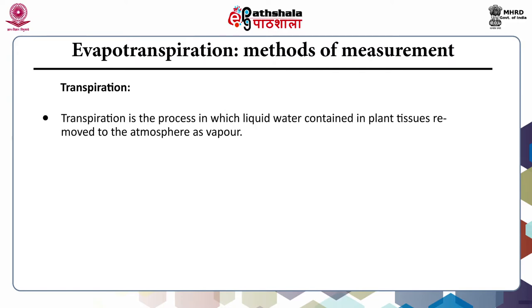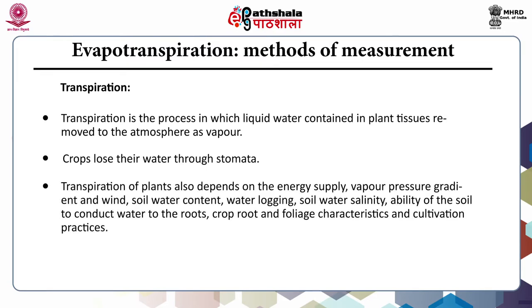Transpiration is the process in which the liquid water contained in the plant tissues is removed to the atmosphere as vapor. The crop loses water through stomata. The transpiration of plants also depends on the energy supply, vapor pressure gradient and wind, soil water content, waterlogging, soil water salinity, ability of the soil to conduct water to the roots, and crop root and foliage characteristics and cultivation practices.